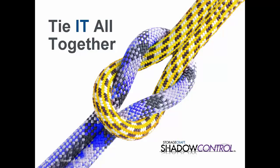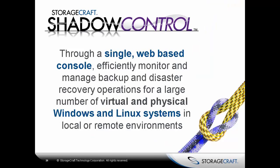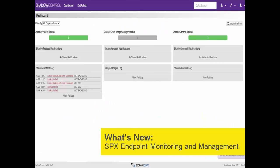Shadow Control is especially helpful where you may have hundreds or even thousands of Windows or Linux systems across multiple clients or sites. Through a single web-based console, you can efficiently monitor and manage backup and disaster recovery operations for a large number of virtual and physical Windows and Linux systems in local or remote environments. In version 3, there are a couple of new features: we have extended Shadow Control to support Linux, supporting the same Windows operating systems and Linux distributions that are supported by Shadow Protect and SBX.